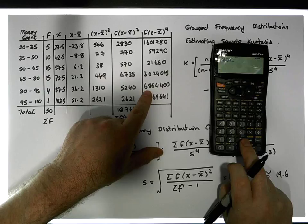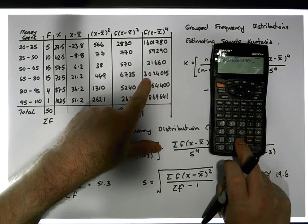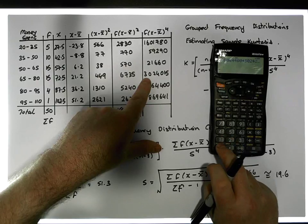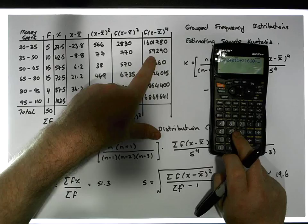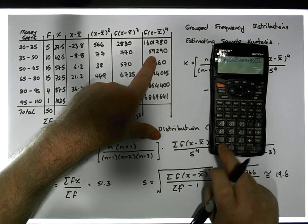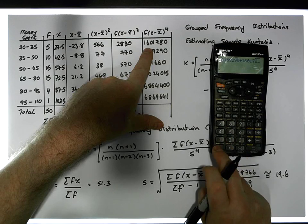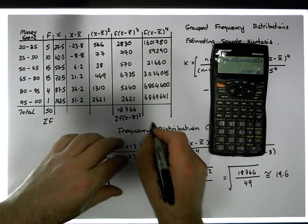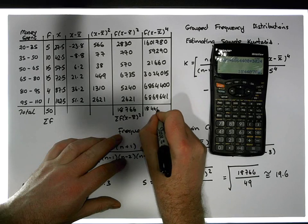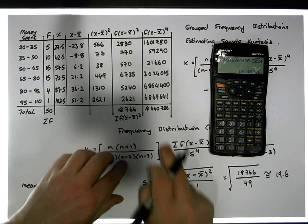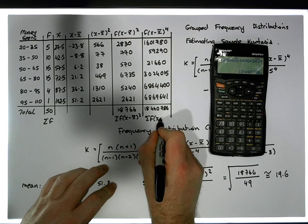Now we sum up this column. Starting from the bottom: 6,869,641 plus 6,864,400 plus 3,024,015 plus 21,660 plus 59,290 plus 1,601,780 gives us a value of 18,440,786. This is the sum of the frequencies times (x minus x̄) to the power of 4.